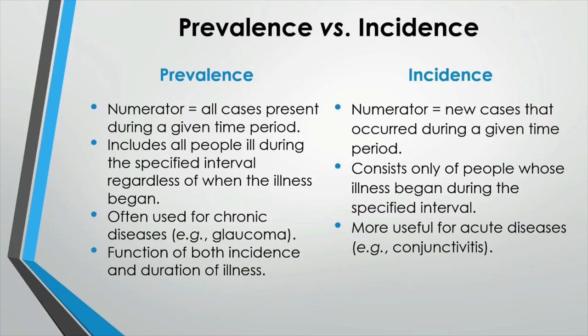Prevalence and incidence are related in that prevalence is a function of both incidence and duration of illness. For example, high prevalence of a disease within a population might reflect high incidence, prolonged survival without cure, or both. On the other hand, low prevalence might indicate low incidence, a rapidly fatal process, or rapid recovery.